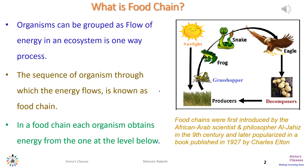Energy produced by the plants is consumed by the grasshoppers. Frogs eat the grasshoppers. Snakes get the energy from the frogs, and snakes are eaten by the eagles. At the end, the decomposers decompose the eagles and go back to the plants. This cycle is known as a food chain. In a food chain, each organism obtains energy from one level below, grouping organisms as a flow of energy in the ecosystem, which is a one-way process. This concept was initiated by the African Arab scientist Al-Jahiz.